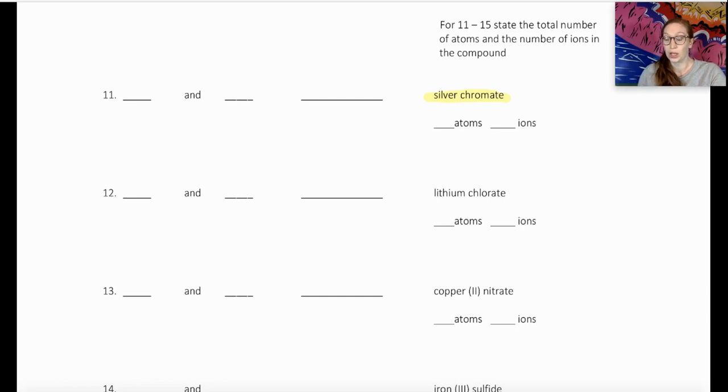So looking at my periodic table of ions, I'm going to look for silver, which is a metal, and I'm going to see that silver has a charge of plus one. It is the first thing I'm going to write there.